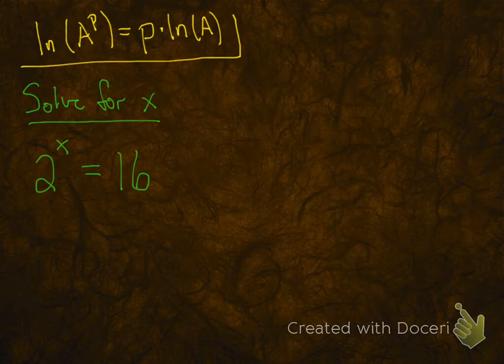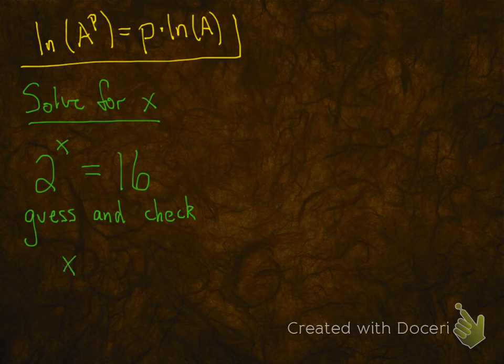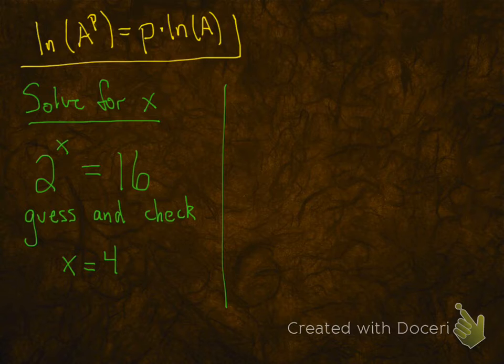2 to the x equals 16. What power can you put on 2 to get 16? Yep, 4. So there it is, there's our answer. That's what we know we should get. Now let's see if we can use natural logs to solve 2 to the x equals 16.